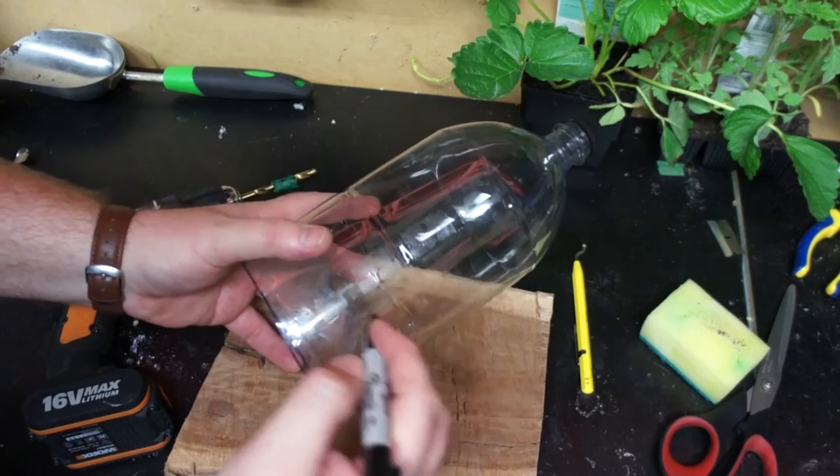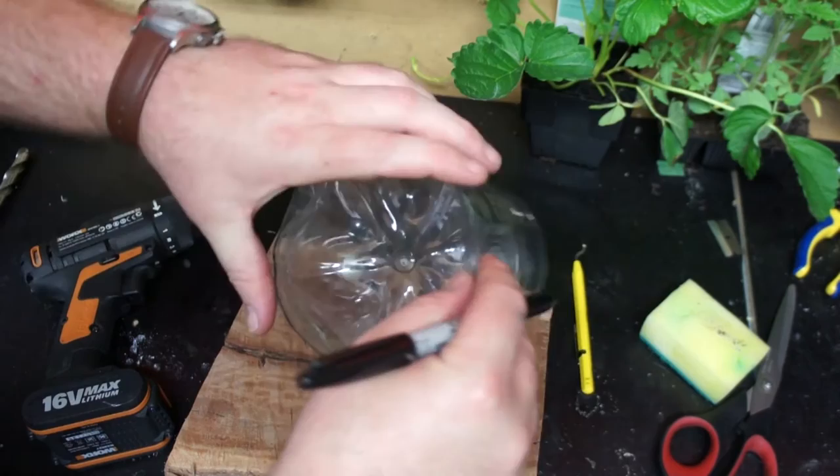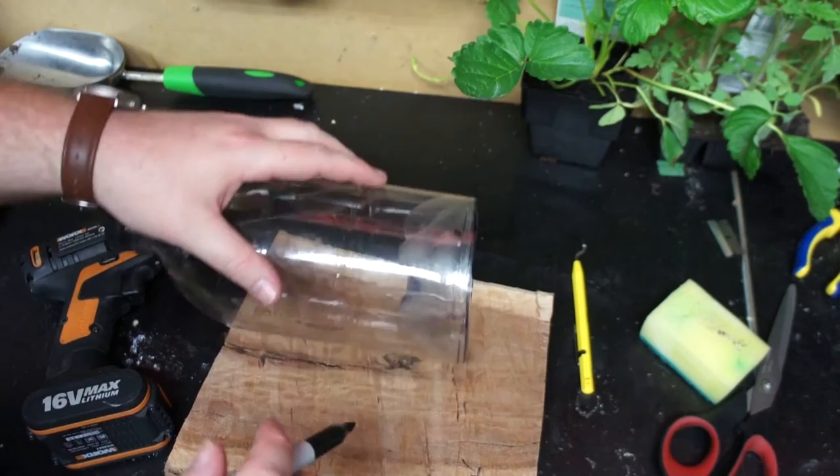Now to attach these two pieces I'm going to drill a hole on either side and thread some wire between the two. This wire is not only going to fasten the two pieces together but it's also going to form the hook so we can actually hang this up.